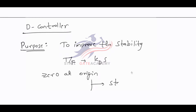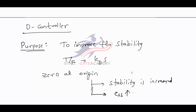Stability is increased, but the ESS increases. In the previous case, what was happening? The steady state error was decreasing but the stable system was becoming unstable.